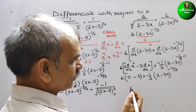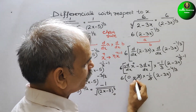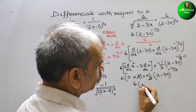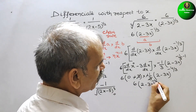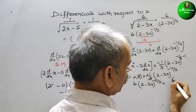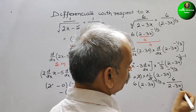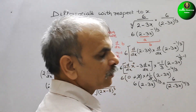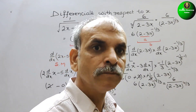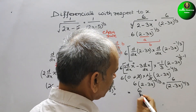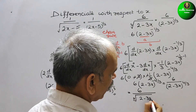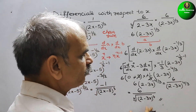Now simplifying: 3 and 3 cancel, minus times minus becomes plus, and 6 times 1 gives 6. So we get 6 into 2 minus 3x to the power minus 4 by 3. Since the power is negative, bring it down: 6 by 2 minus 3x to the power 4 by 3. This means (2 minus 3x) to the power 4 under a cube root. So the final answer is 6 by the cube root of (2 minus 3x) to the power 4.